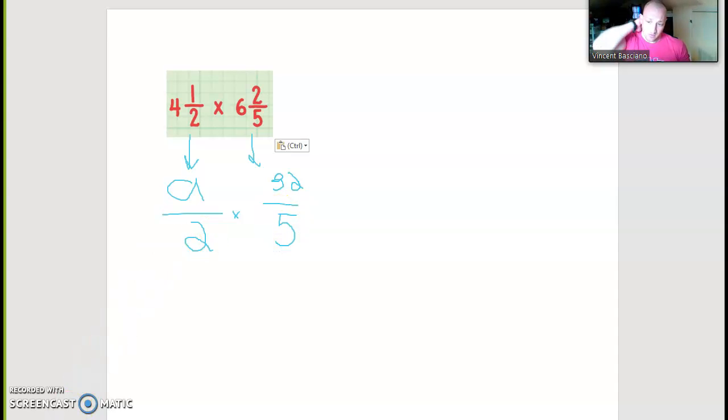All right, so so far we've done a good job of converting our mixed numbers. The next thing we need to do is simplify before we multiply, and that basically is going to make us nine and five can't be simplified, but we know if we divide thirty-two and two by two, this will become a one, and thirty-two becomes a sixteen.